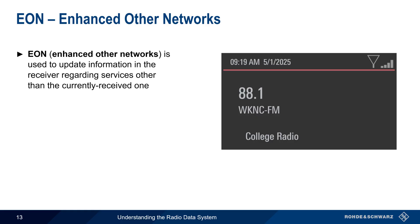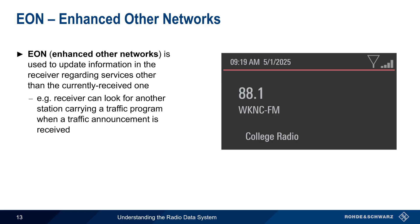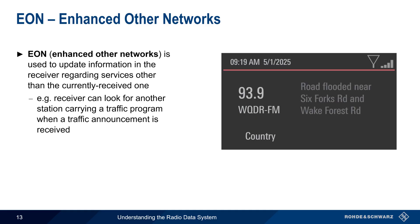EON is used to update information in the receiver regarding services or programs other than the one currently being received. For example, this stored information could be used by a receiver to find and switch to another station carrying traffic programs, when the receiver sees that the traffic announcement bit has been set, but that the currently tuned program does not contain traffic information.